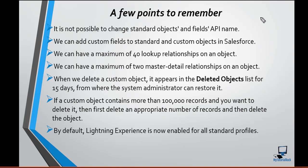The next thing is we can have a maximum of 40 lookup relationships on an object. This number was originally 25, but after the Summer 16 release it changed to 40 lookup relationships. However, if that particular object already has two master detail relationships, then you can only create 38 lookup relationships — you cannot create 40, because the total number of relationships on an object is 40.